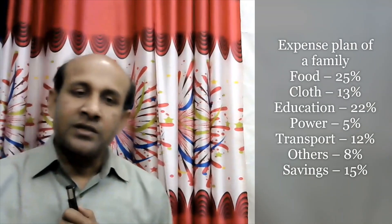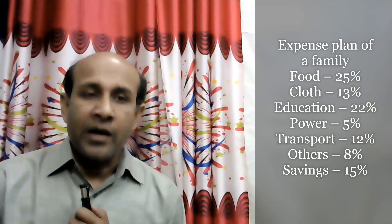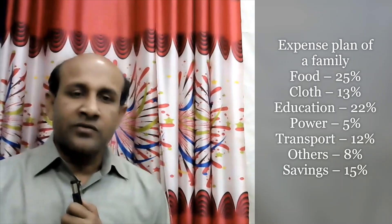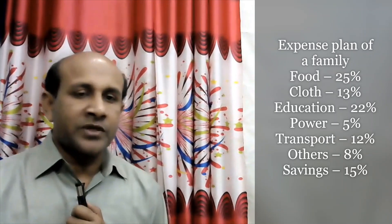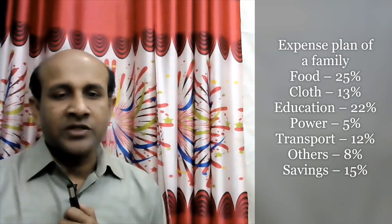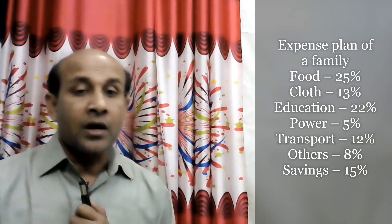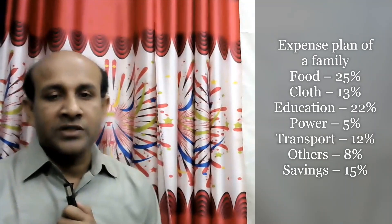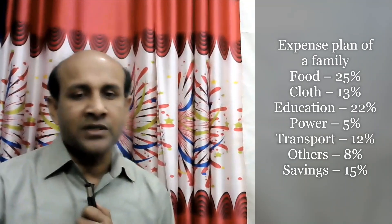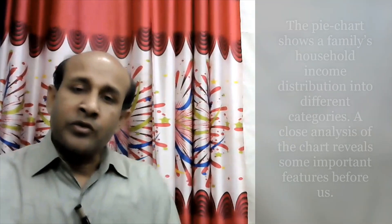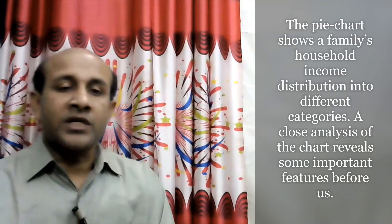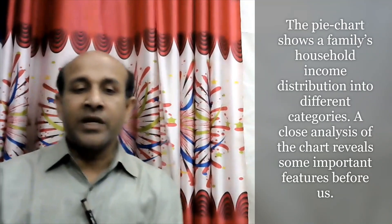I am asking you to see a family expense plan: food 25%, cloth 13%, education 22%, power 5%, transport 12%, others 8%, and savings 15%. The pie chart shows a family household income distribution into different categories.